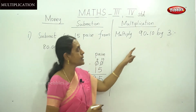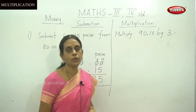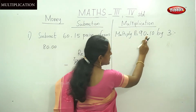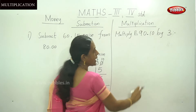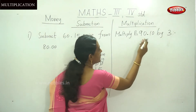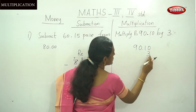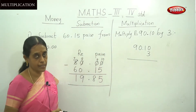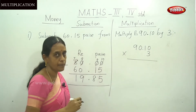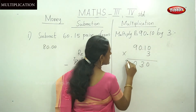Multiply 90 Rupees and 10 Paise. If you put a dot it represents Rupees and Paise — read it as 90 Rupees and 10 Paise. Write down the first number: 90.10, placing a dot here. This is the multiplicand and 3 is the multiplier. Now say the multiplication table: 3 times 0 is 0, 3 times 1 is 3, 3 times 0 is 0, and 3 times 9 is 27.